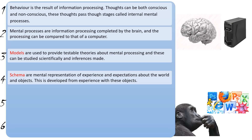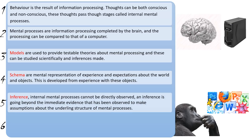Another term we need to know is inference. Cognitive psychologists are interested in internal mental processes, but these can't be directly observed. You can measure brain activity directly, and you can measure behaviours directly. But an inference is to go beyond the immediate evidence — to go beyond just the behaviour that you've observed in your experiments — and make an assumption based on that behaviour about how the mental process works.